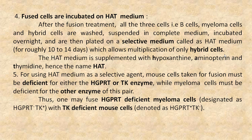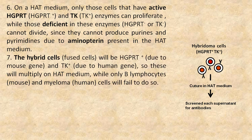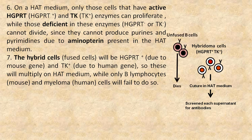Thus, one may fuse HGPRT-deficient myeloma cells with TK-deficient mouse cells. On HAT medium, only those cells that have active HGPRT and TK enzymes can proliferate, while those deficient in these enzymes cannot divide, since they cannot produce purines and pyrimidines due to aminopterine present in the HAT medium. The hybrid cells will be HGPRT and TK positive, so these will multiply on HAT medium, while unfused B lymphocytes and myeloma cells will fail to do so.